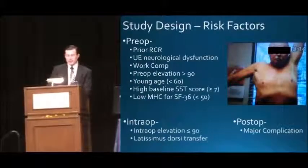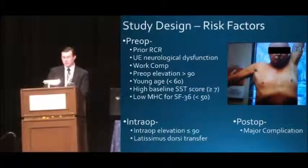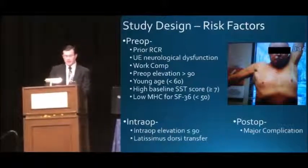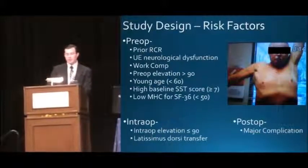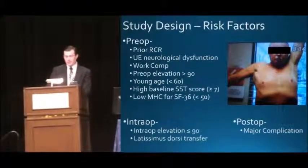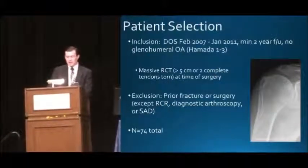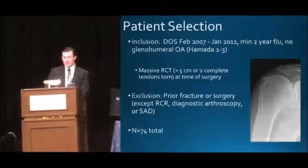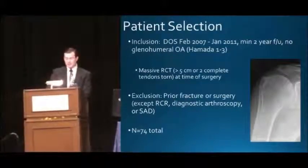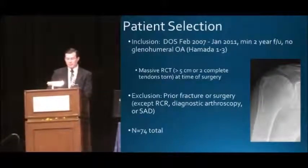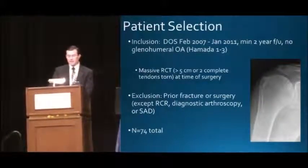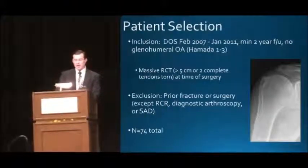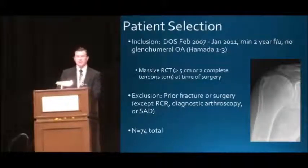The following risk factors were selected from the literature prior to data collection, all of which had previously been associated with poor outcomes after shoulder or other joint arthroplasties. To be included in the study group we required two-year follow-up after massive cuff tear treated with reverse, with no preoperative glenohumeral arthritis according to the Hamada classification. Patients were excluded if they had prior fracture, infection, or open surgery.